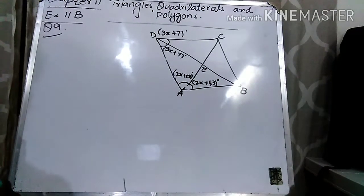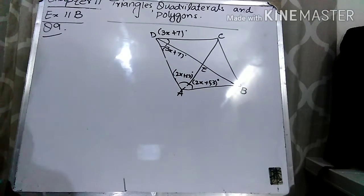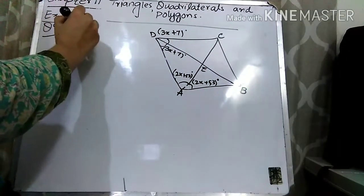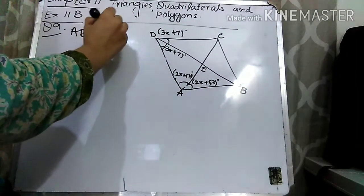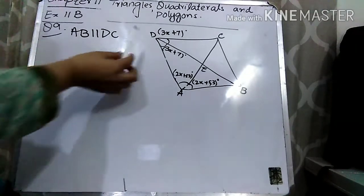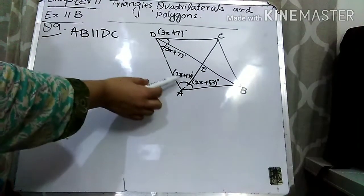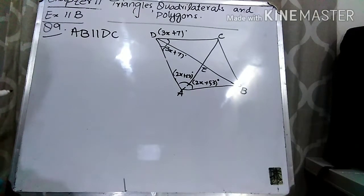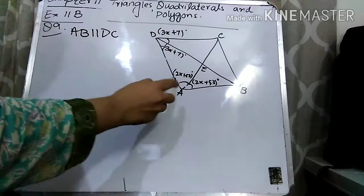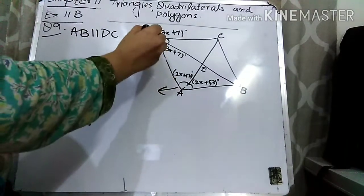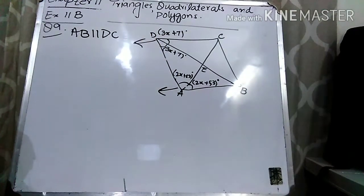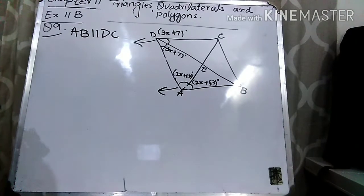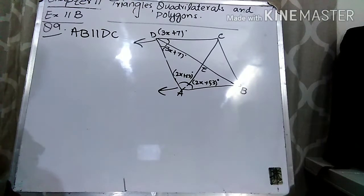Now you can see that AB and DC are parallel lines. We can write down that AB and DC are the parallel lines. So here we can use the property of parallel lines. These two angles are inside the parallel lines, so these two are the interior angles, and you know that the sum of interior angles of parallel lines is equal to 180 degrees.